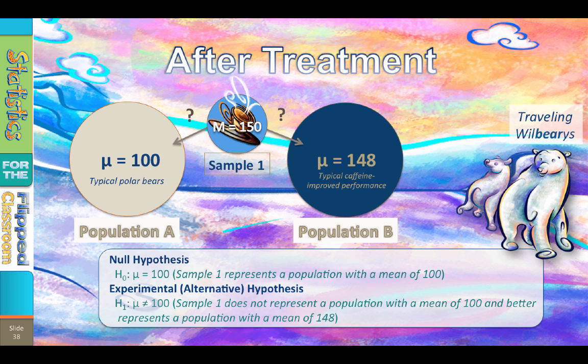We will find that it is more likely that sample 1 represents a population with a mean of 148. So ultimately, we will reject the null hypothesis that says sample 1 represents a population with a mean of 100.